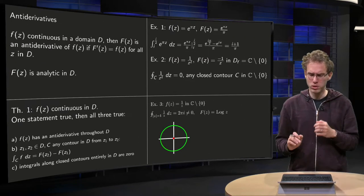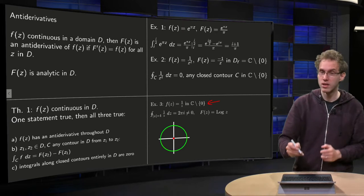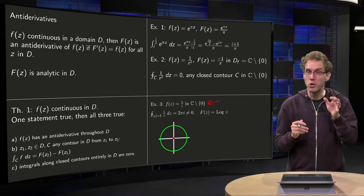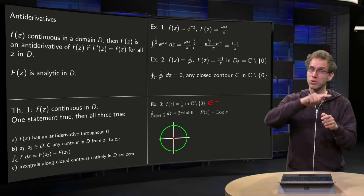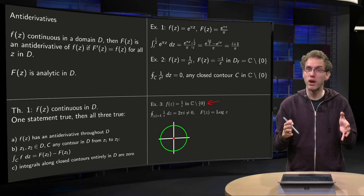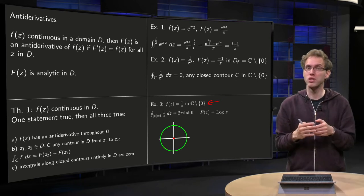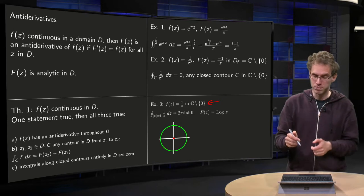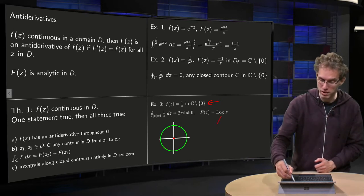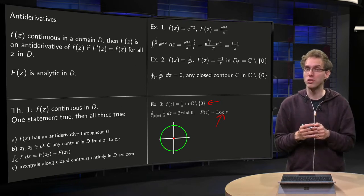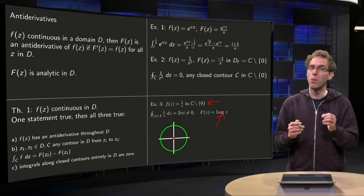But what about then the 1 over z defined on all of C except for zero? Because we saw in the earlier example that the contour integral along the unit circle going around the origin yielded 2 pi i, was not equal to zero. Why is that? Because also this function has an antiderivative, capital log of z. So why isn't the contour integral along the closed curve zero?